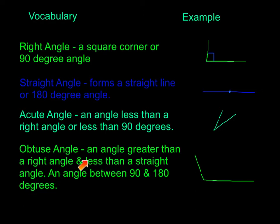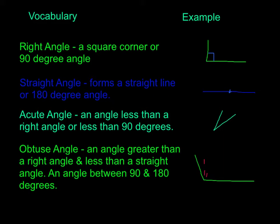An obtuse angle is an angle greater than a right angle and less than a straight angle — between 90 and 180 degrees. Notice if this were a right angle, our line would come up almost straight. We can see that it's more than 90 degrees, but at the same time it's less than 180 degrees. So because it's more than 90 and less than 180, it becomes an obtuse angle.